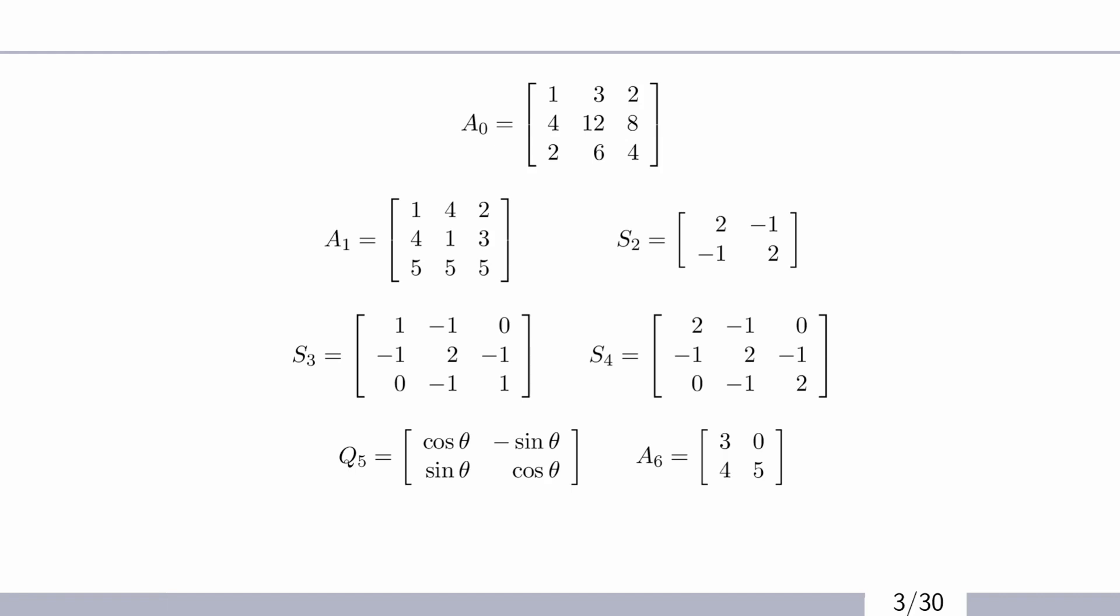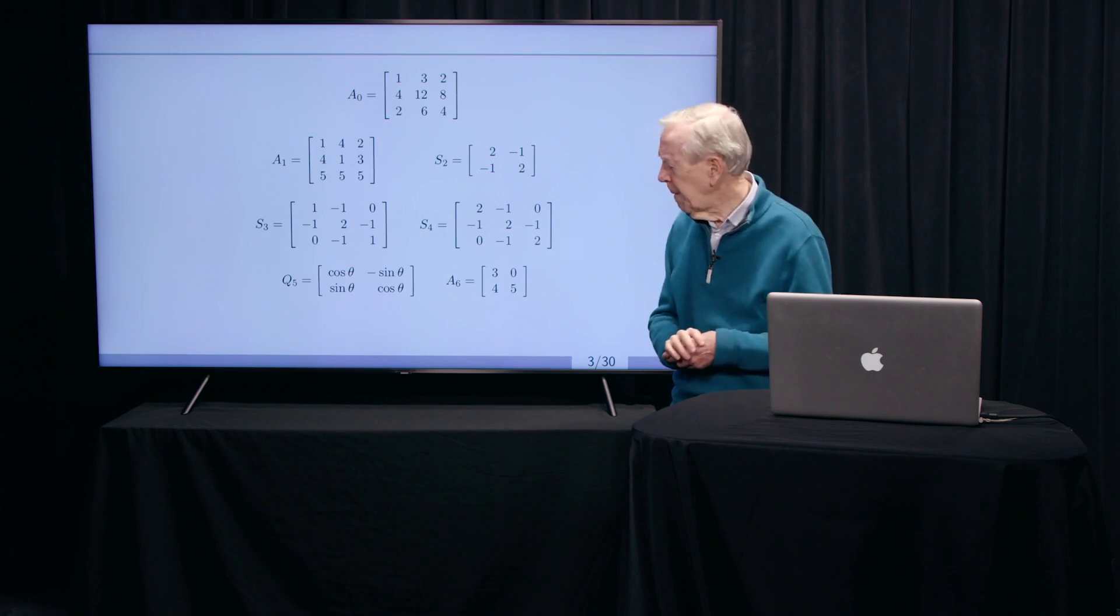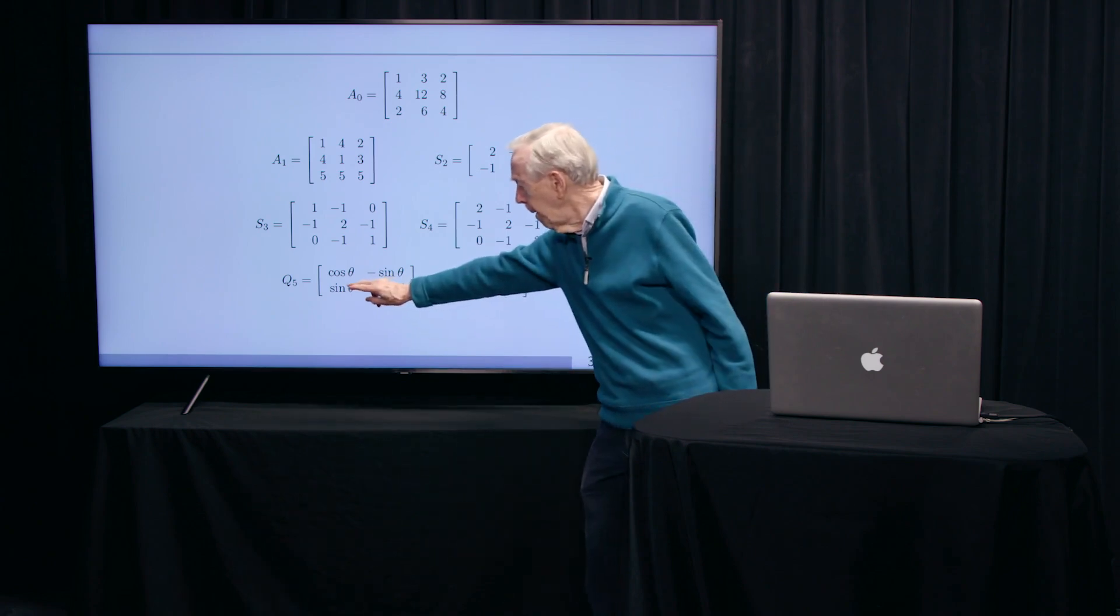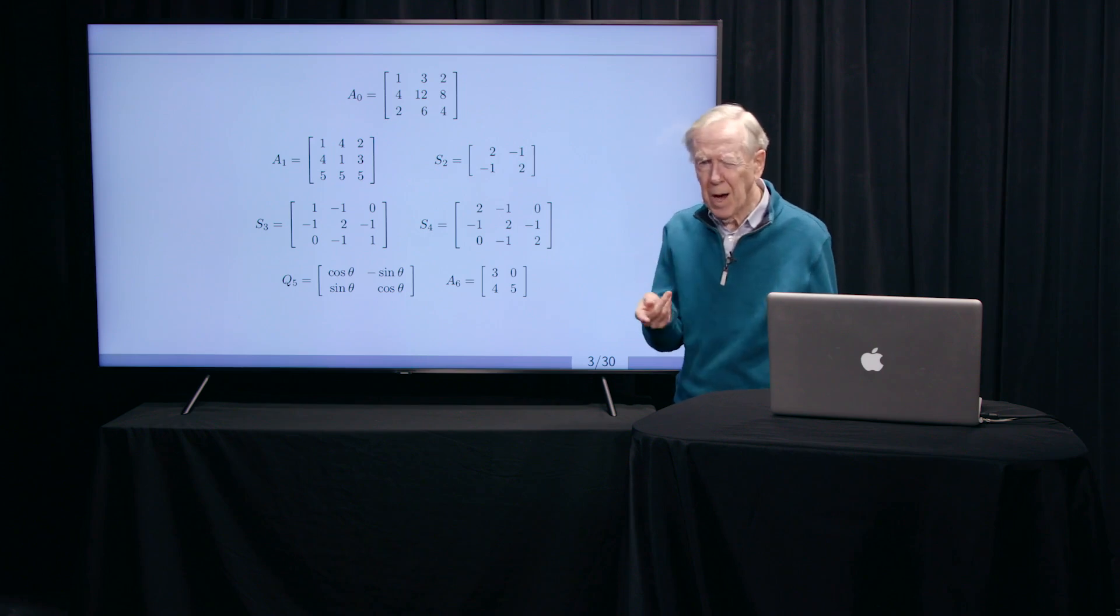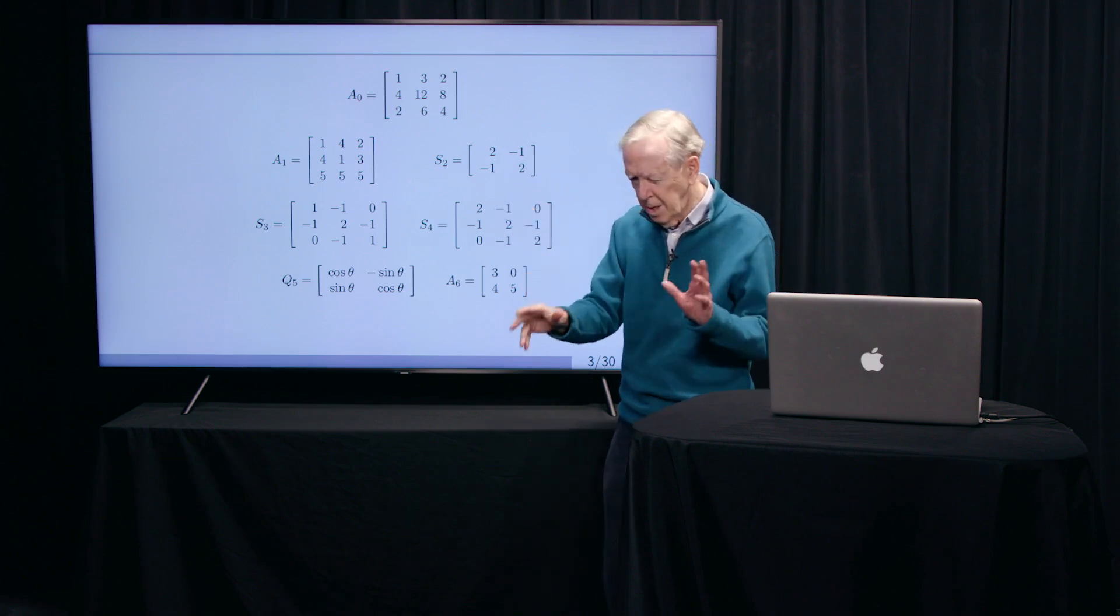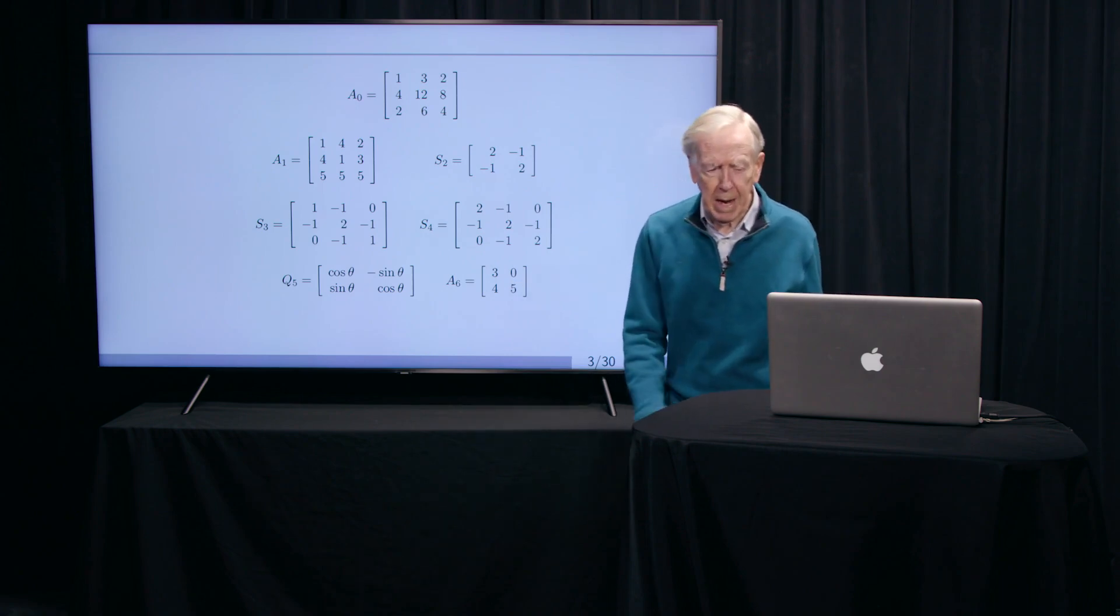Then here are S's for symmetric matrices. Those are the kings of linear algebra. And here are a few small samples. And the queens of linear algebra are these matrices I call Q. Those are called orthogonal matrices. Orthogonal meaning perpendicular. And they tend to express a rotation. So that's a rotation matrix, an orthogonal matrix that rotates the plane.